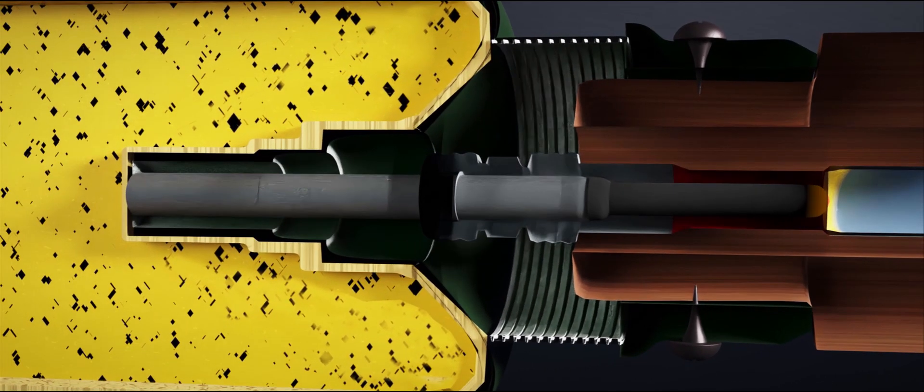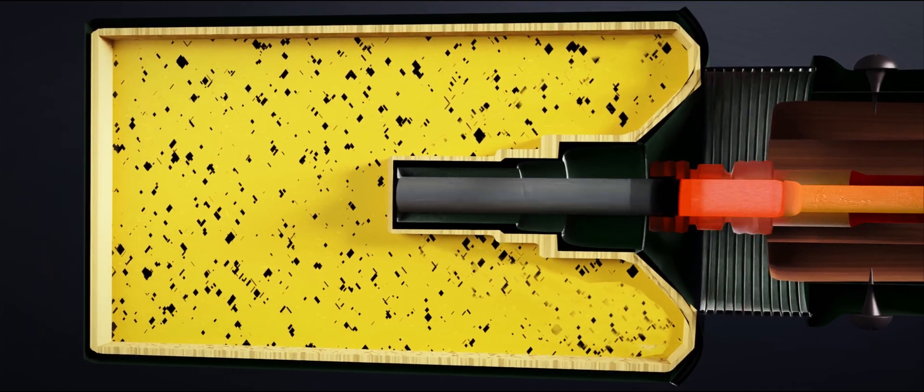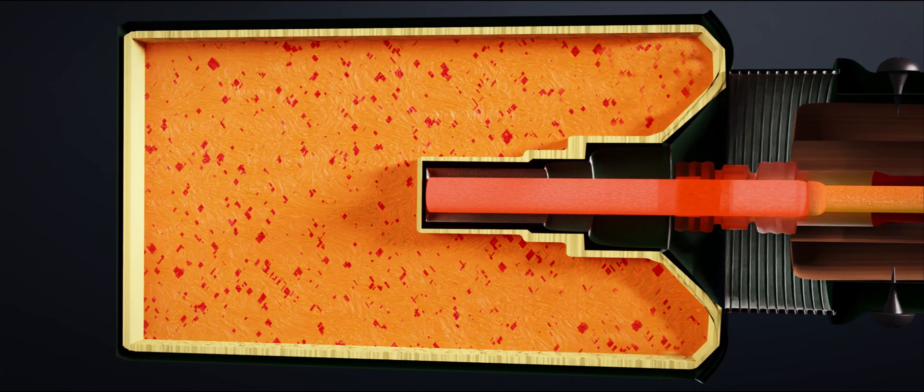The spark ignites the delay powder pellet. The delay powder pellet burns exactly up to 4.5 seconds. Then the delay pellet ignites the detonator. It burns rapidly and ignites the TNT in the head.